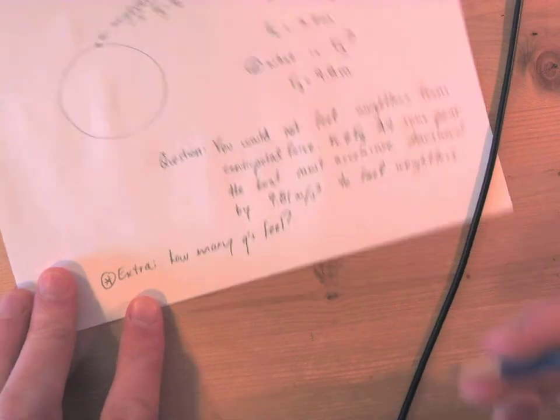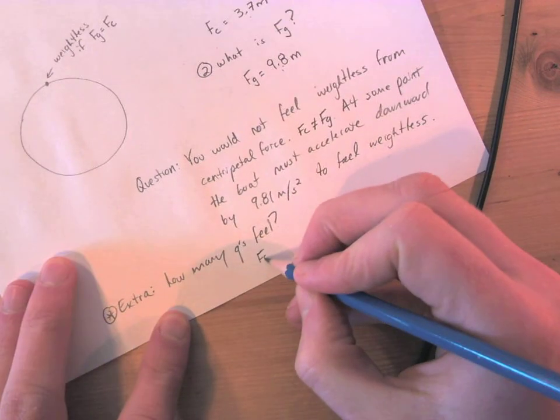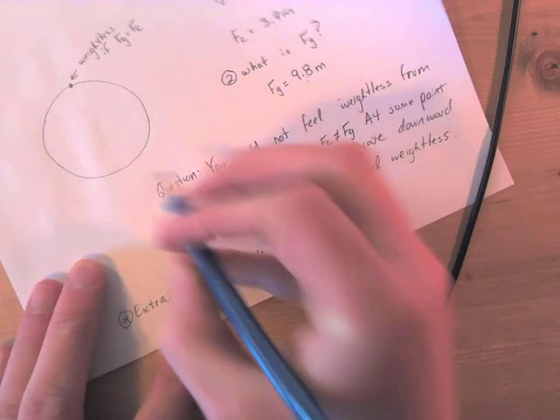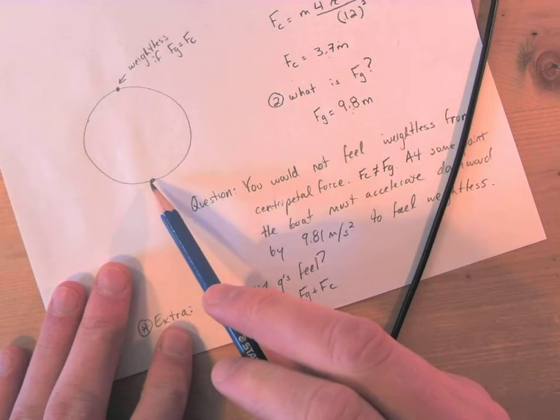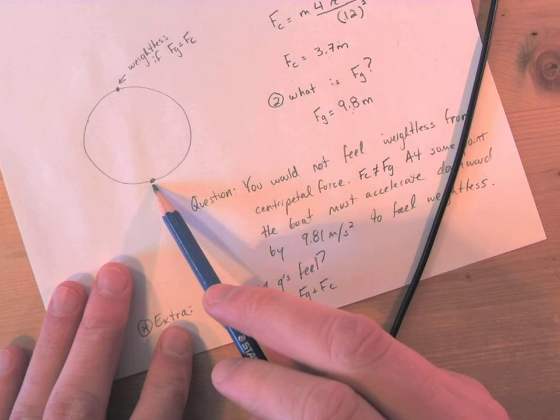That's what one g is. So we'll look at this: FG plus FC. That's at the bottom here. Remember at the bottom of the circle, that's when you feel the most kind of weight.